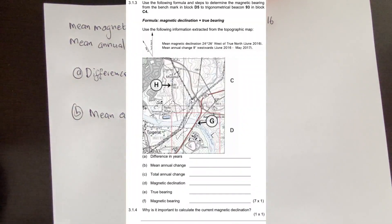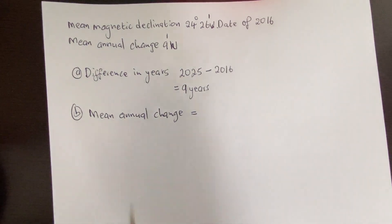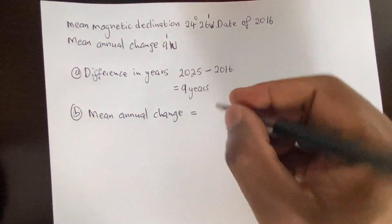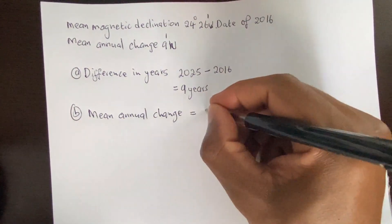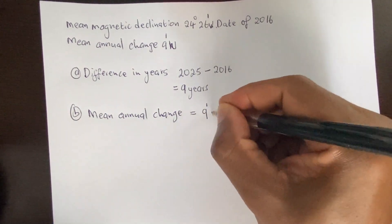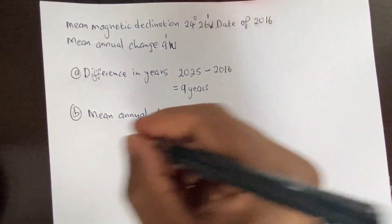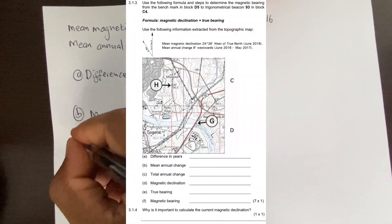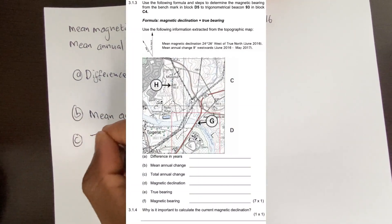Step B: Find the total annual change. The mean annual change is 9 minutes west. Step C is to calculate the total annual change.